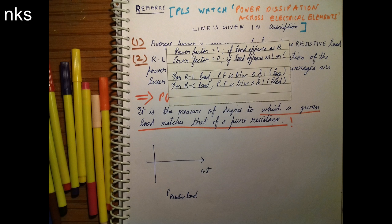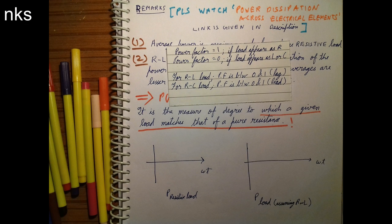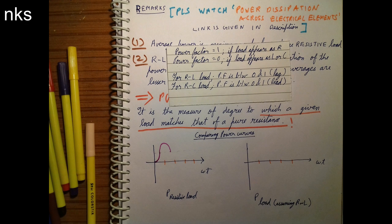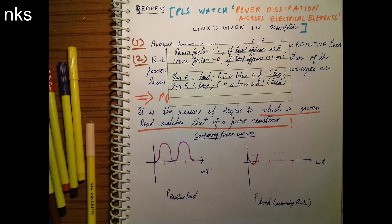And now we will compare these two power curves. So from the figures we can conclude that the P average for the resistive load is maximum, that is it is higher than the P average for the RL load.